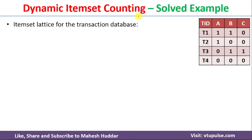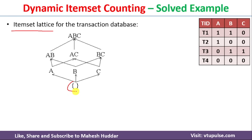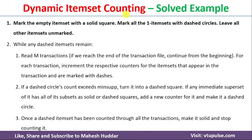Before applying the dynamic item set counting algorithm, we generate the item set lattice for the given transaction database. We start with the empty set, then add one item at a time — nodes for A, B, and C — drawing edges from each item's subset (the null set) to that item. Next, we add nodes for two-element sets: AB, AC, and BC, with edges from their respective subsets. Finally, we add ABC with three edges.